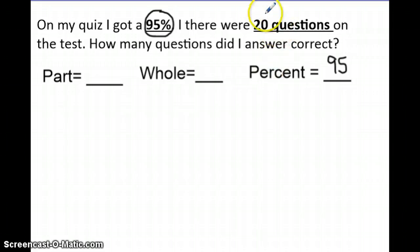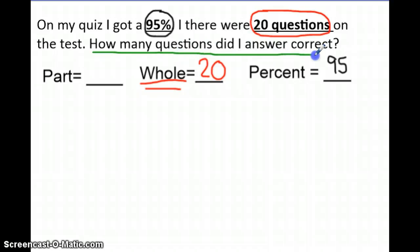There were 20 questions on the test. This problem is telling us that there in fact were 20 questions. The total amount of questions were 20. The total is similar to the whole. So for the whole, we're going to put 20. And then it says, how many questions did I answer correct? So our question is, how many questions did I answer correct? Which is a part of it. A piece of the test, we want to figure out how many we got right.